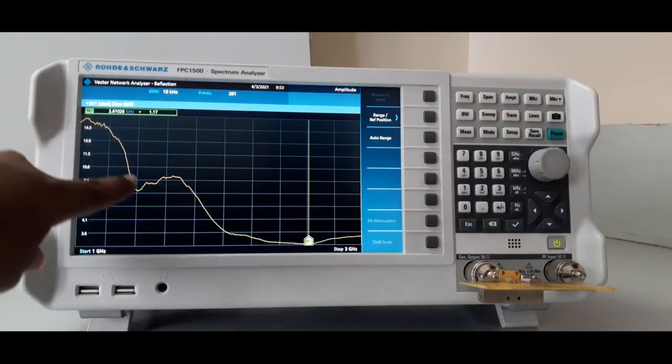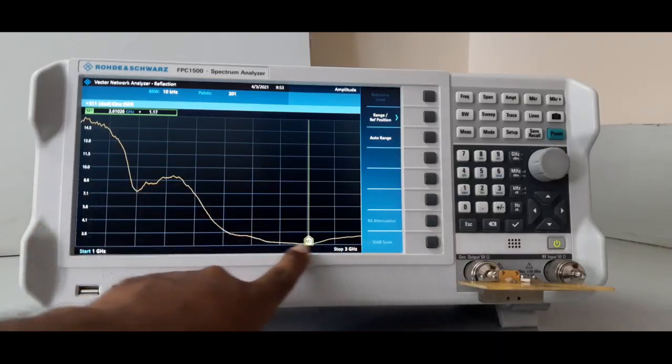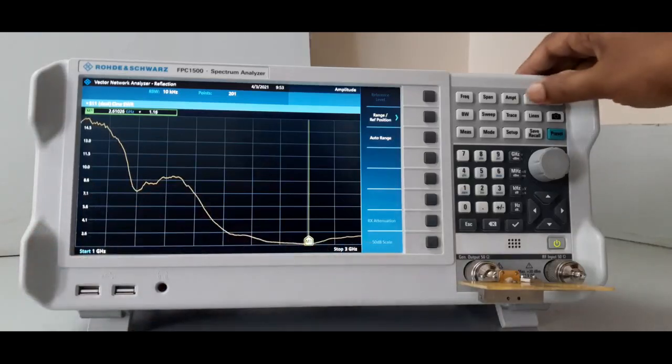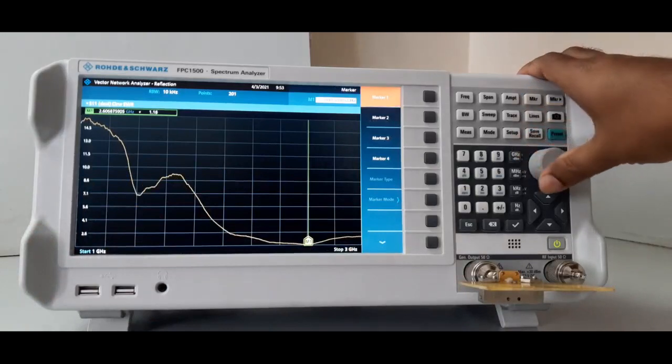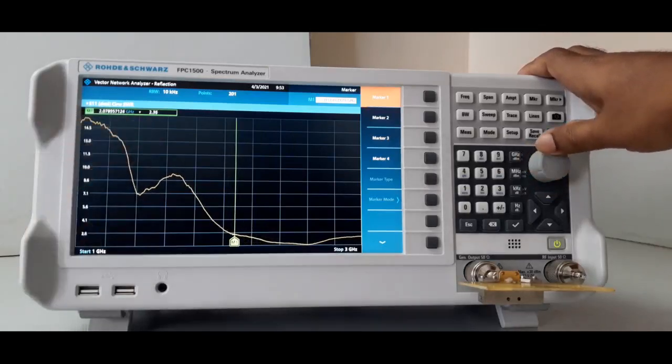And then it is increased up to 8.6, then it is very good ranges from here. Marker I can move. See here around less than 2 only. From here also 2 gigahertz around, after 2 gigahertz.